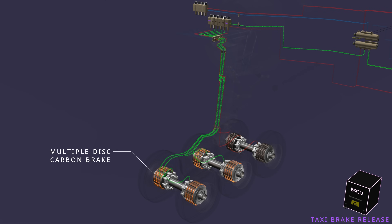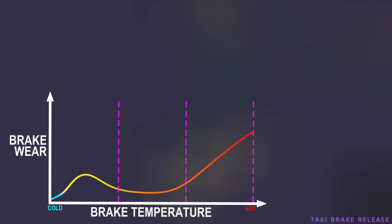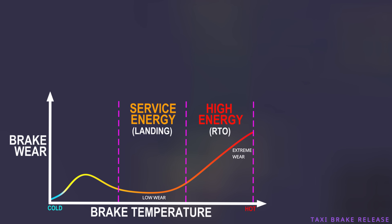The aircraft uses multiple disk carbon brakes, which are selected because they excel at higher temperatures. The service energy range refers to the temperatures at which the brake operates during the normal landing phase, where brake performance is crucial for safety and control. Within this range, carbon brakes offer high friction with less brake wear. However, brake wear increases rapidly if the temperature exceeds the optimal range. High energy braking is only used in emergencies such as a high-speed rejected takeoff. The disadvantage is that in the low energy range, brake wear is relatively high.